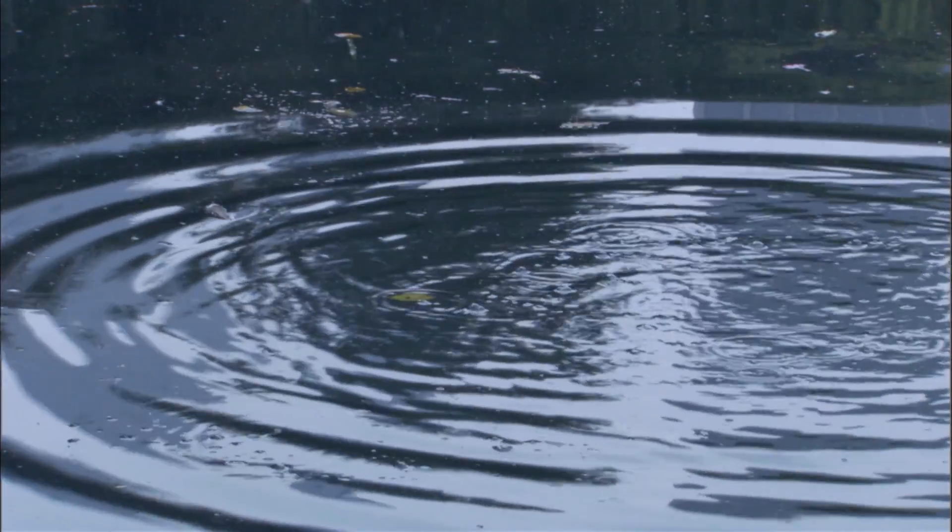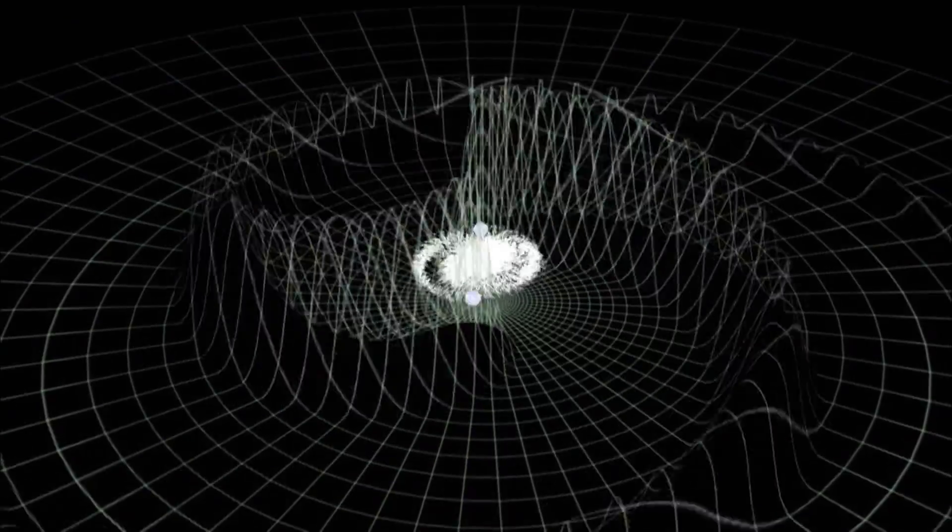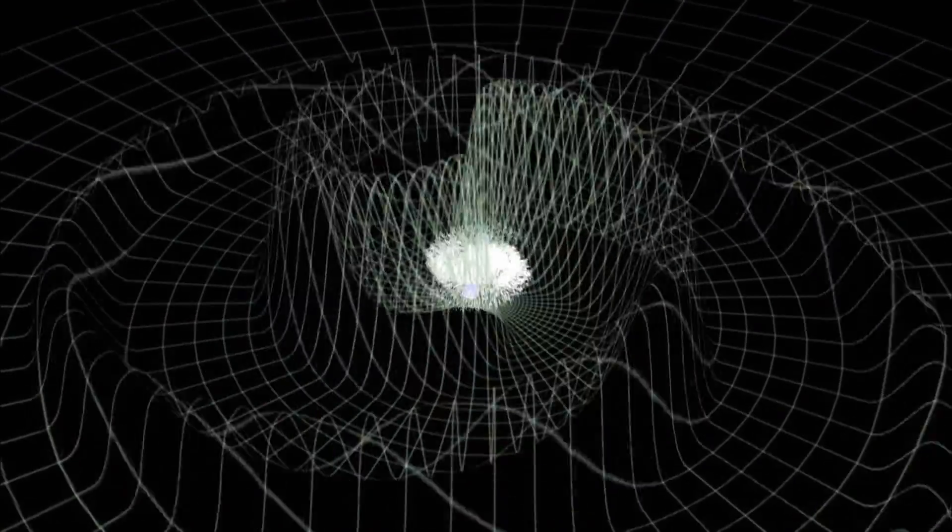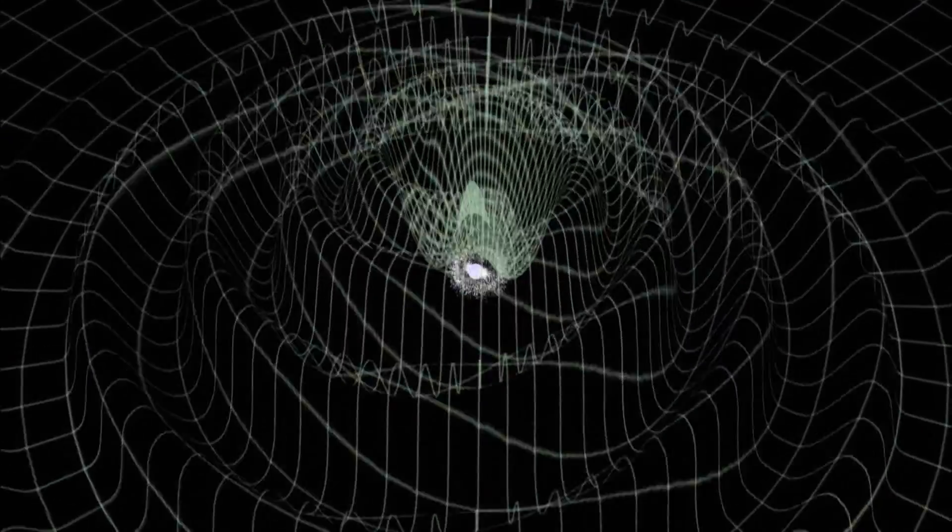It's like a rock hitting a pond. Some of the energy of the impact is transferred to waves that move outward along the surface. Likewise, a titanic collision of black holes would send waves, gravity waves, racing across the universe.